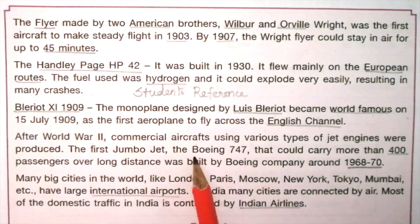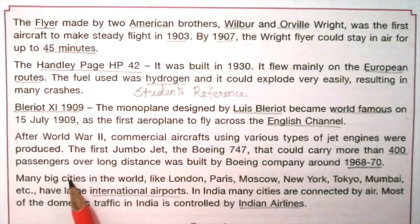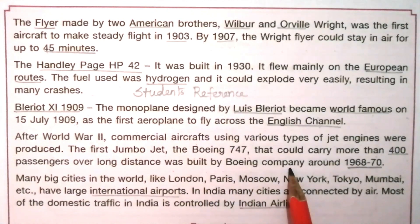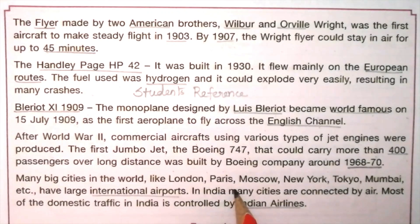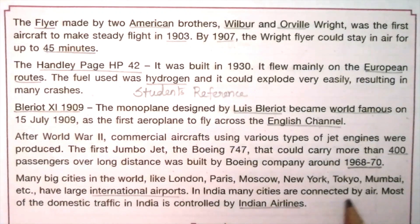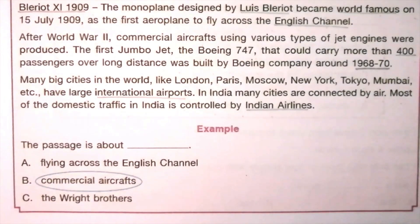The first jumbo jet, the Boeing 747, could carry more than 400 passengers over long distances and was built by Boeing Company around 1968 to 1970. Many big cities in the world like London, Paris, Moscow, New York, Tokyo, Mumbai, etc. have large international airports. In India, many cities are connected by air. Most of the domestic traffic in India is controlled by Indian Airlines. Example: The passage is about commercial aircrafts.